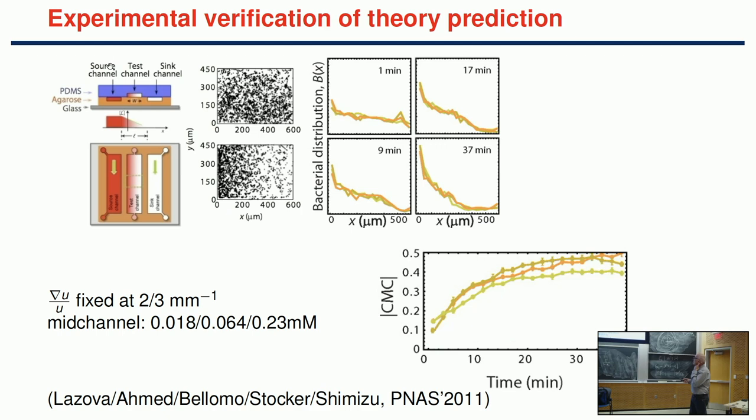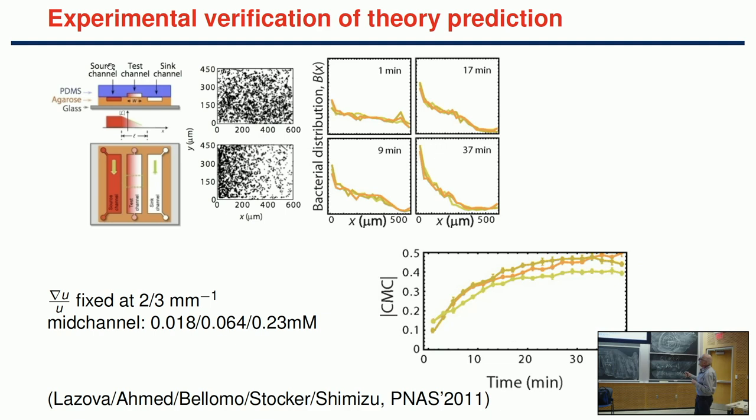This was confirmed experimentally a year later by a group in the Netherlands. Graphs show the distribution of bacteria in a microfluidics channel at one, nine, seventeen, and thirty-seven minutes, over three orders of magnitude of concentration scaled versions—the histograms are essentially the same, meaning the search is scale invariant.